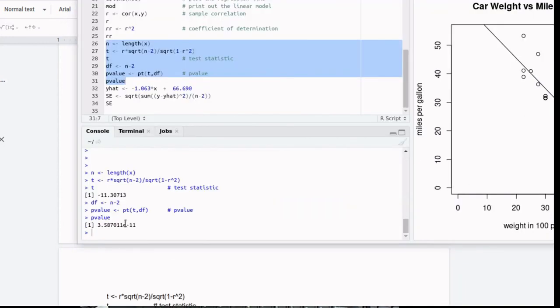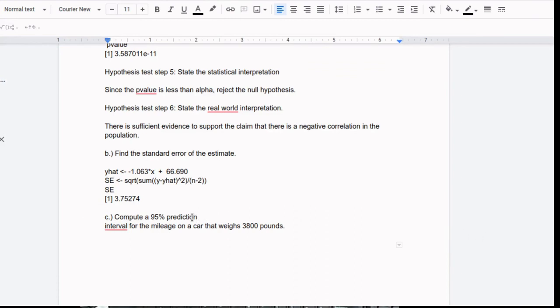So if we run that little chunk of code we get this output, which we can copy and paste into our report. The length of this video has gone a little bit over time. So I'm going to compute the 95% prediction interval for the mileage of the car at 3,800 pounds in another video.